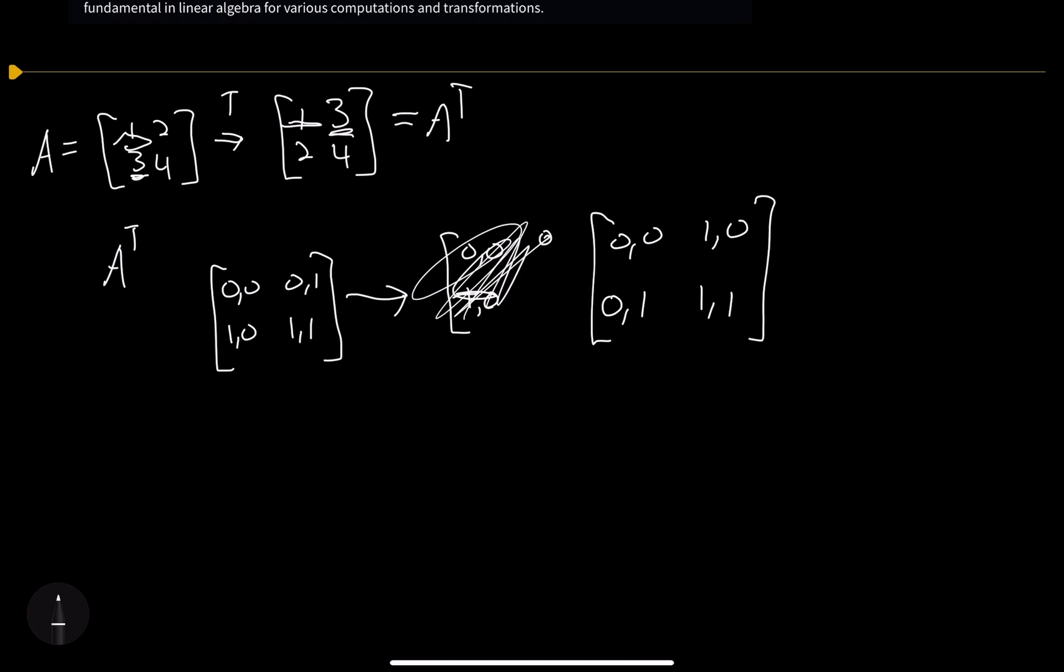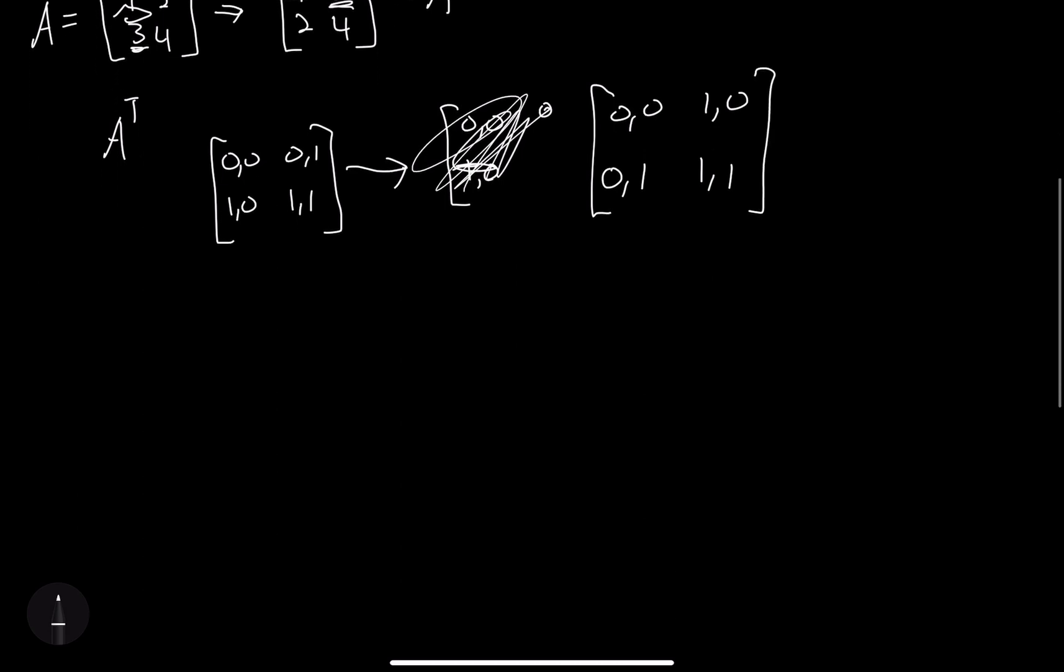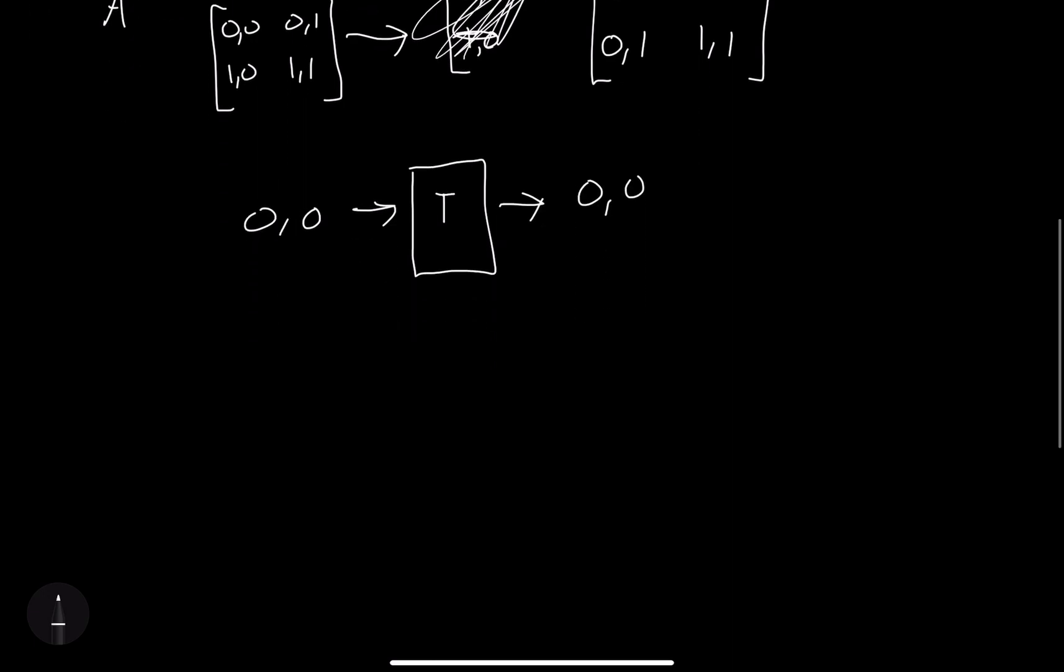So that's basically what we want to do. We could imagine we have a machine, let's call it the transpose machine. We take any two points, let's say 0,0, go through the transpose machine and it transposes it. In our case it would be 0,0 again because that's the same thing.